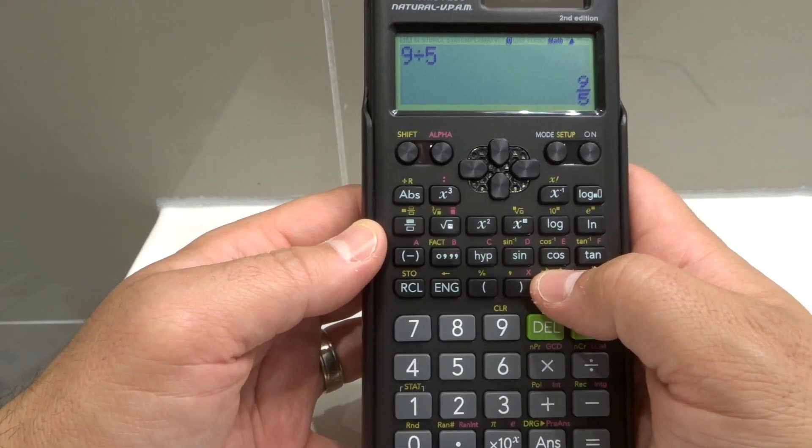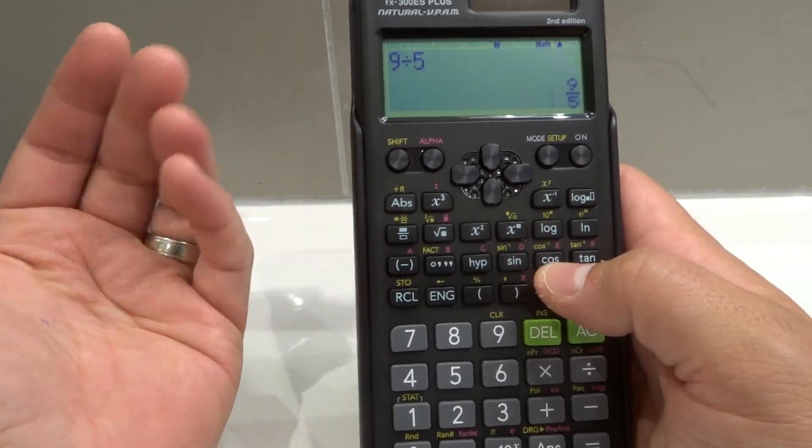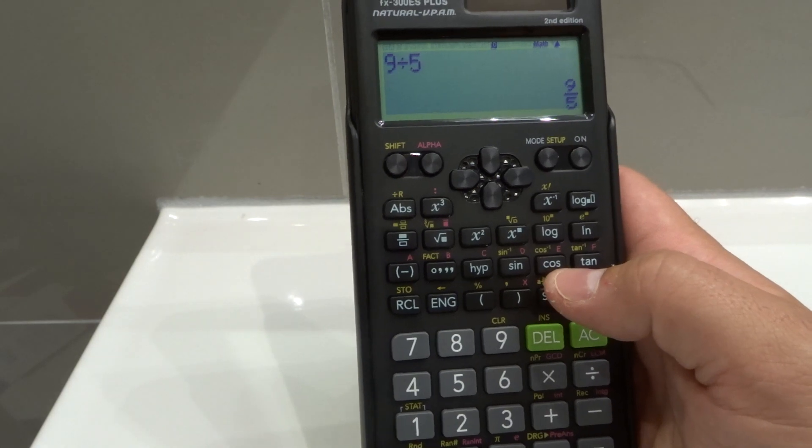If I press it again, it's going to go back to 9 fifths. Again, 1.8. So that's how to do it on a per answer basis, and you can do this as many times as you need to.